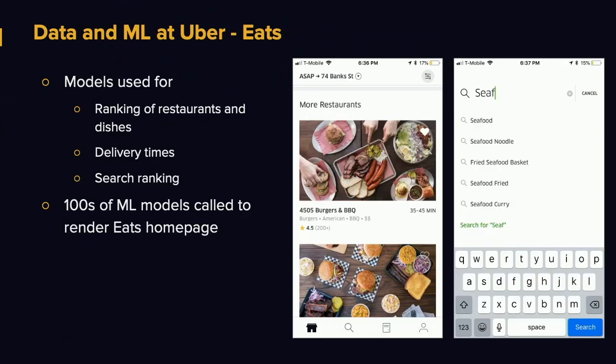Another line of business Uber has is Uber Eats, which is growing very fast. All the Eats functionality is driven by data and ML models. The models are used for ranking of restaurants, delivery times, and search ranking. There are hundreds of models which get predicted and render the Eats home page — what dishes you want, what recommendations to show. These models are trained from data and ML platforms, making it a very big use case for Uber.